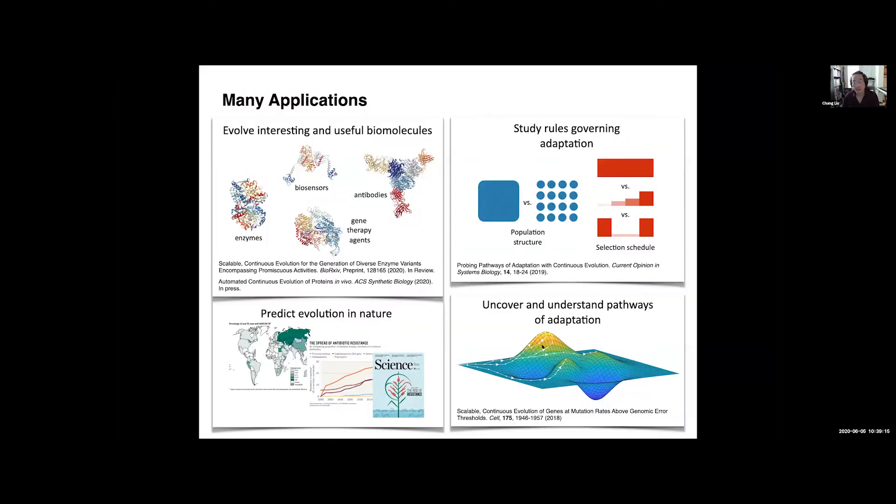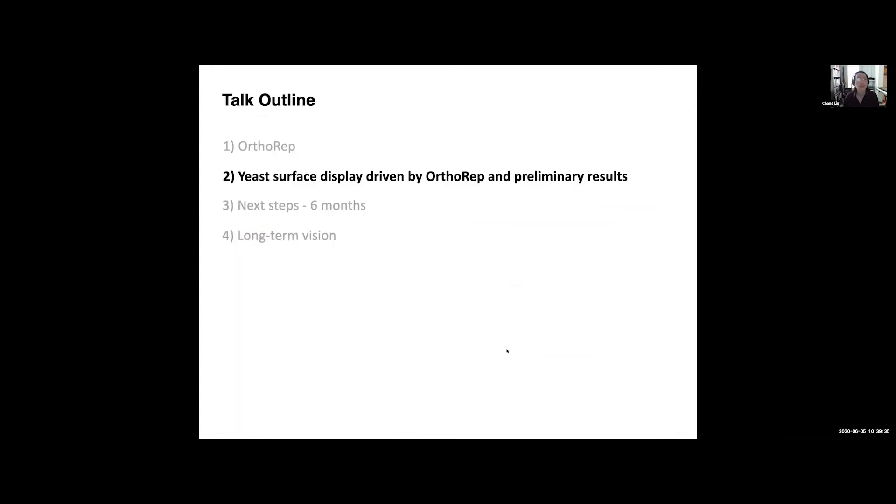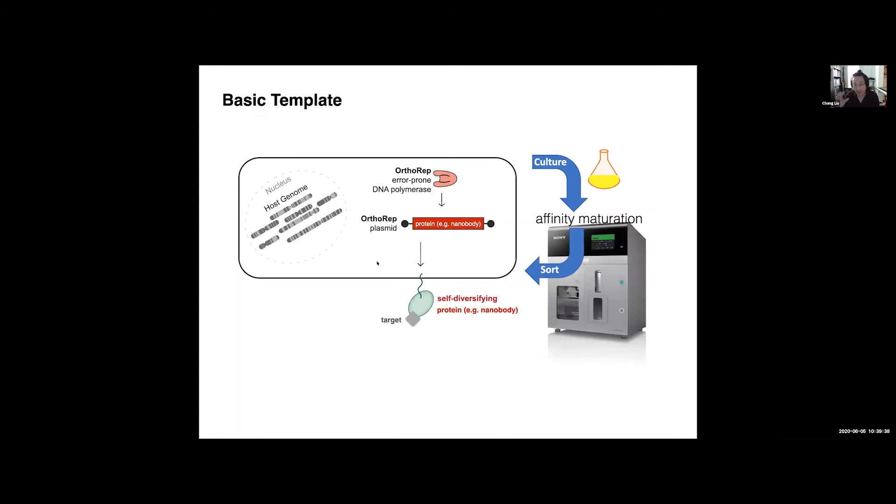And so we're using OrthoREP in many applications, and I'm going to talk about ones that are based on our antibody evolution project, but we also are running continuous enzyme evolution experiments, biosensory gene therapy agents, all sorts of things, and exploring evolutionary pathways to uncover some of the fundamentals of protein evolution. So the basic template, as I explained in the approach, is as follows. Basically, we're going to have some binding protein scaffold encoded on OrthoREP, it will be self-diversifying, and we will sort for binding the target and repeat cycles of this to affinity mature, essentially, what that binding protein is doing.